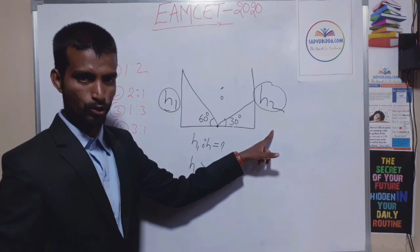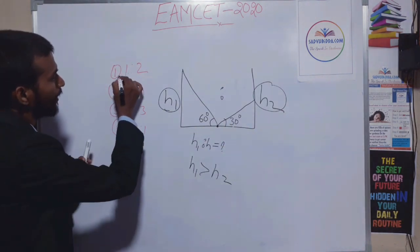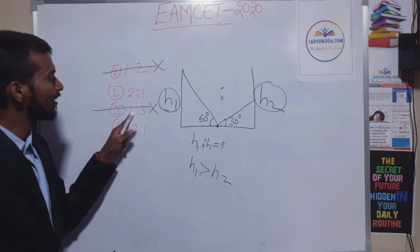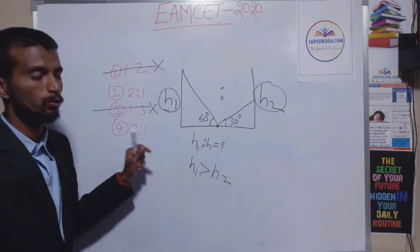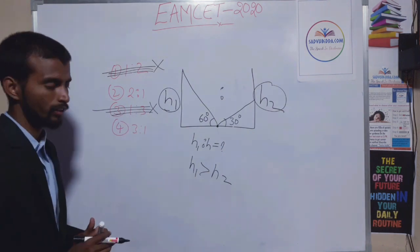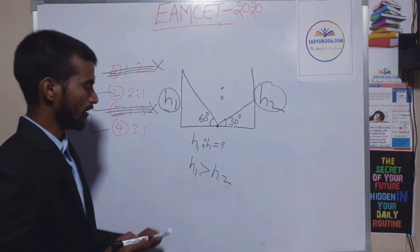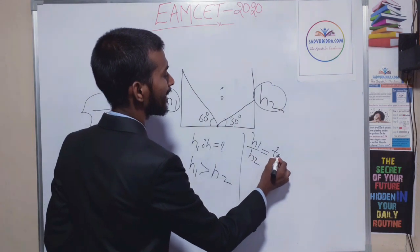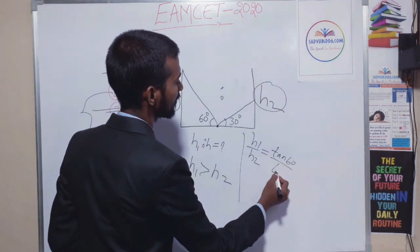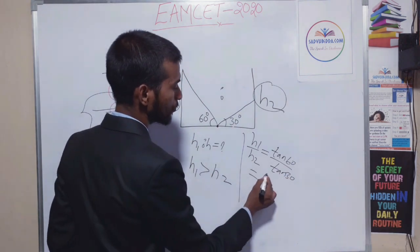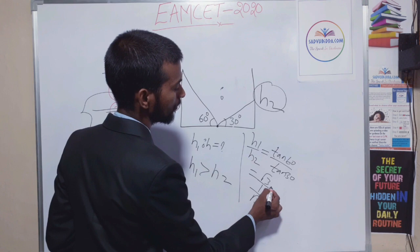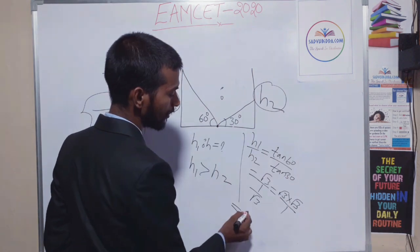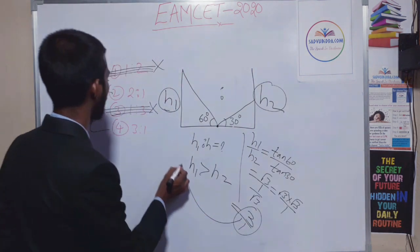H1 will be greater than H2. So looking at the options, 1 is to 2 is the wrong answer, and 1 is to 3 is also the wrong answer, because in those cases H1 would be less than H2. Now two options are remaining. H1 divided by H2 equals tan 60 divided by tan 30, which equals root 3 divided by 1 over root 3, which equals root 3 times root 3, which is 3. So H1 to H2 is 3 to 1. That is your answer.